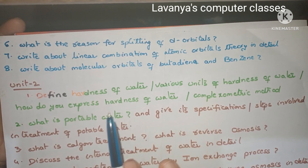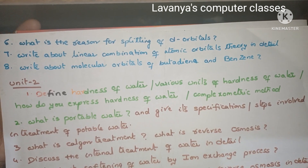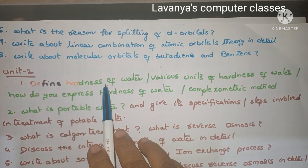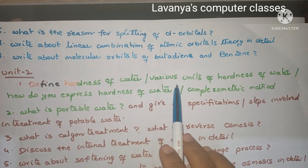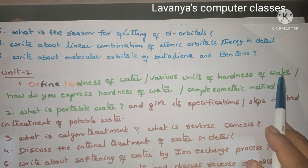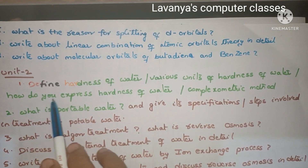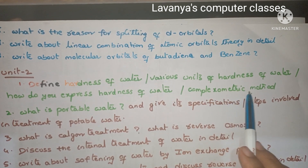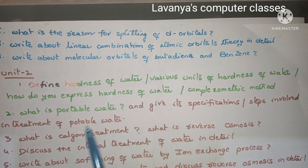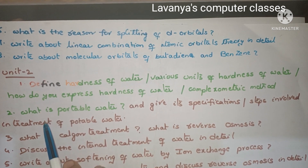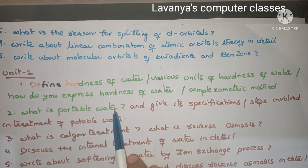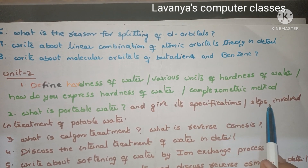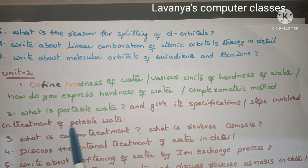Next, important questions in Unit 2: define hardness of water, various units of hardness of water, and how do you express hardness of water. Complexometric method — explain everything about water and hardness of water. Next one is: what is potable water, and give its specifications, and the steps involved in treatment of potable water.